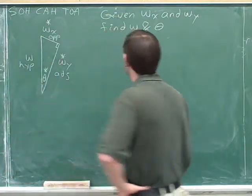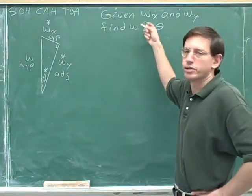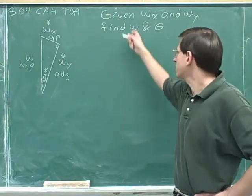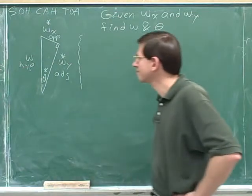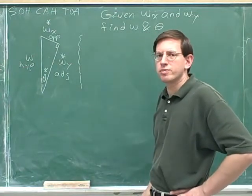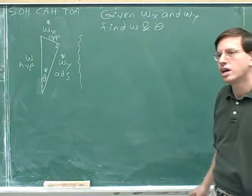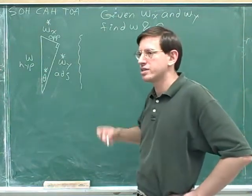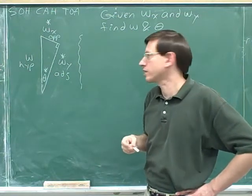Now let's first start by finding w. If you wanted to, you could start by finding theta. It doesn't matter what order you do these in. But let's start by finding w. Well, this is one of those problems where we've been given two sides. We know that when you're given two sides, you don't need a trig function to find the third side. You can just use the Pythagorean theorem.